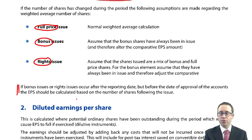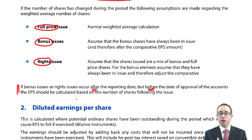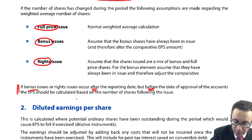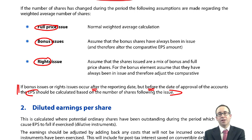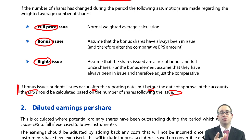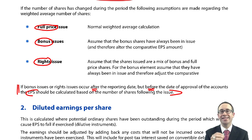I don't think the numbers are going to be examinable. One small point worth mentioning is that it ties in with IAS 10 — events after the reporting period. It says that if bonus issues or rights issues occur after the reporting date but before the date of approval of the accounts, the EPS should be calculated based on the number of shares following the issue. So even though they've been issued after the reporting date, the financial statements haven't been authorised, so we make the assumption that they were issued at the reporting date. This is an adjusting event — a small point connecting IAS 33 and IAS 10.